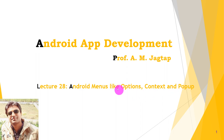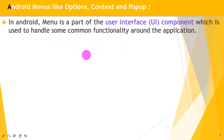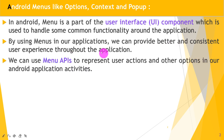So let's begin with Android menus. In Android, a menu is a part of the user interface component which is used to handle some common functionalities around the application. By using menus in our application, we can provide a better and consistent user experience throughout the application. We can use menu APIs to represent user actions and other options in our Android application activities.